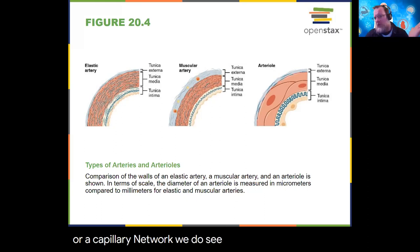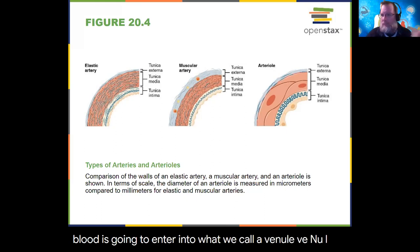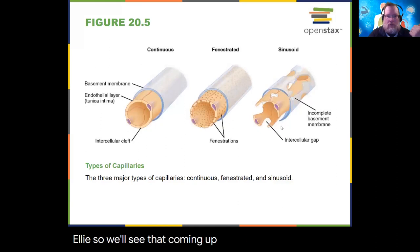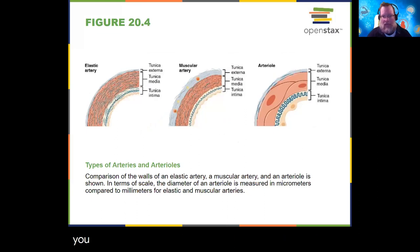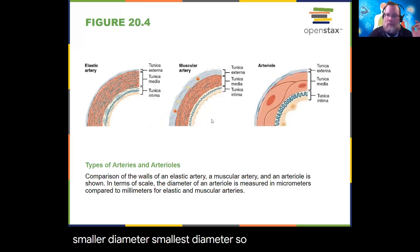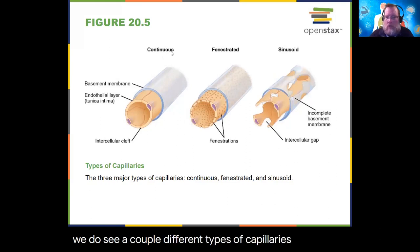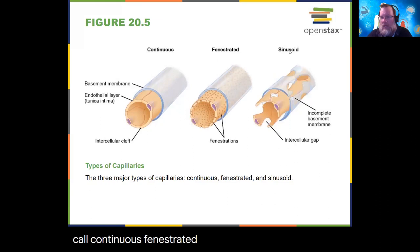A similar thing happens with veins — as we leave a capillary network, blood enters what we call a venule, V-E-N-U-L-E. But before we get there, let's stop at the capillary. We started at elastic arteries, going from larger to smaller to smallest diameter. Now we're in a capillary network, and we see a couple of different types: continuous, fenestrated, and sinusoid.